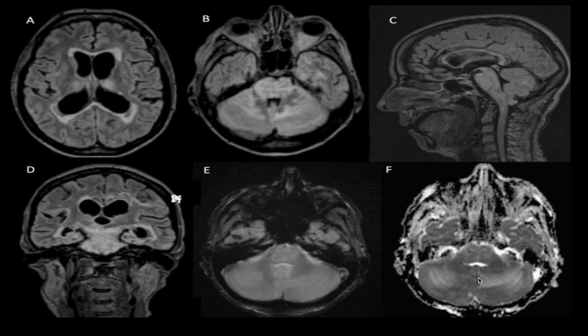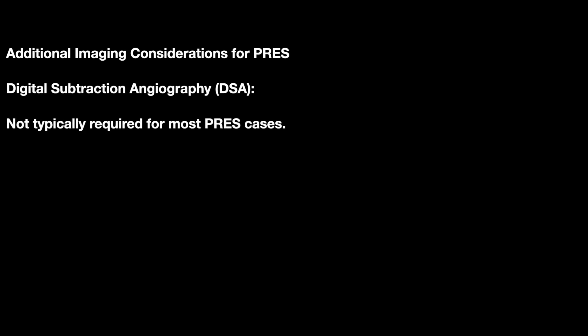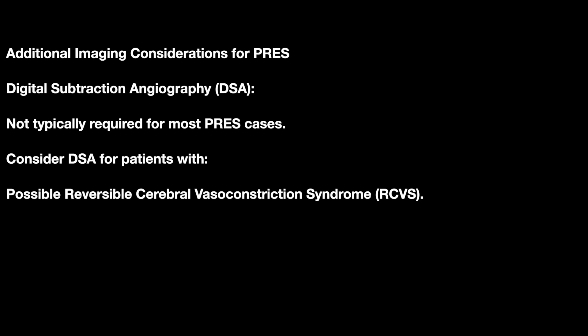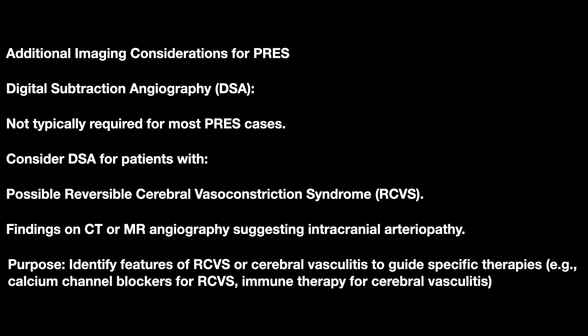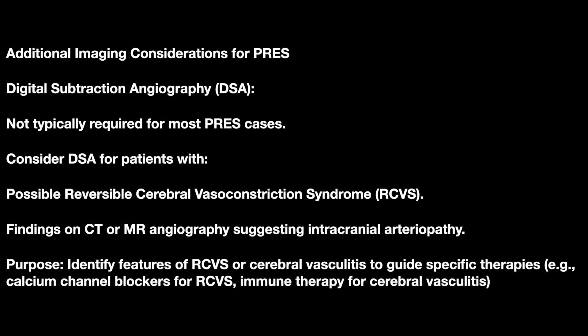If atypical findings are present, a lumbar puncture can be considered. Further imaging with digital subtraction angiography (DSA) should be considered in patients with possible reversible cerebral vasoconstriction syndrome, or when CT and MRI findings suggest intracranial arteriopathy. The purpose of DSA is to identify RCVS or cerebral vasculitis to guide specific therapies.